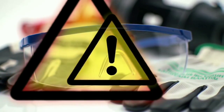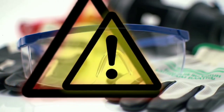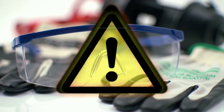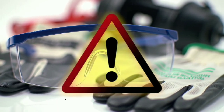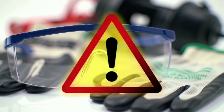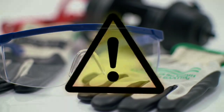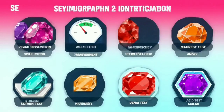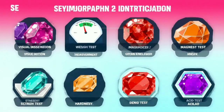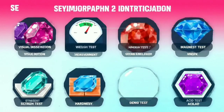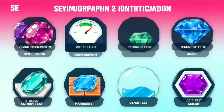Safety first. Wear gloves and protective goggles when handling acids or applying heat to keep yourself and your sample safe. Here's what we'll do: visual inspection, weighing, magnet test, streak test, hardness check, density measurement, and finally the acid test. Let's get started.